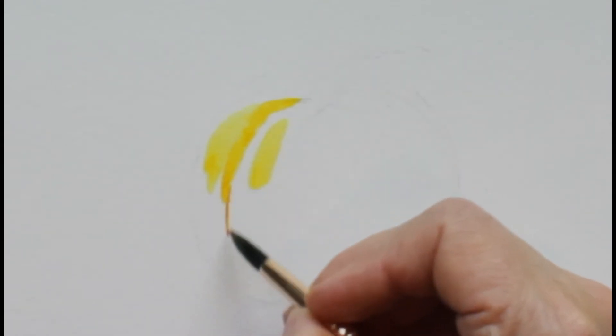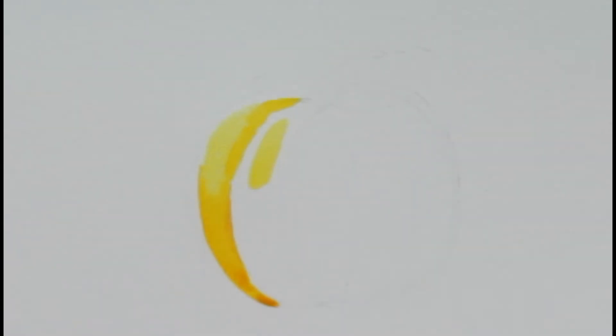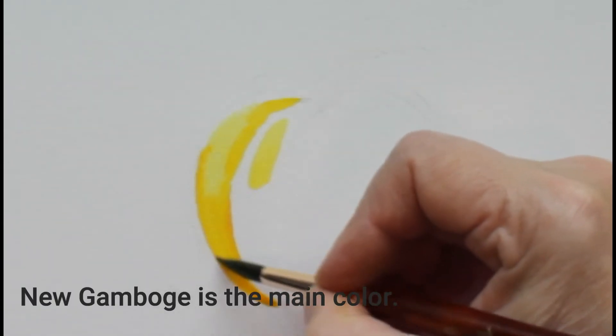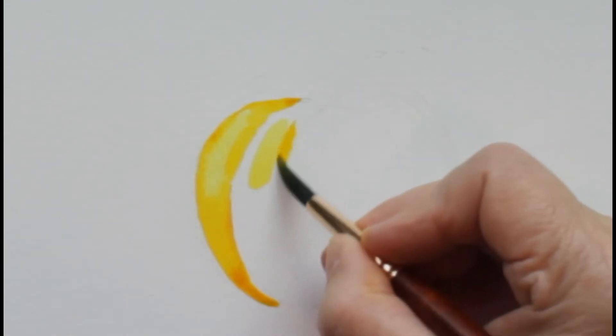I'm putting in highlights first. I started with Hansa yellow, which is a nice light transparent yellow. The more orange part of the pumpkin is new gamboge, which is just a beautiful pumpkin color.